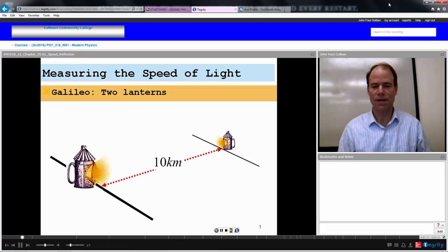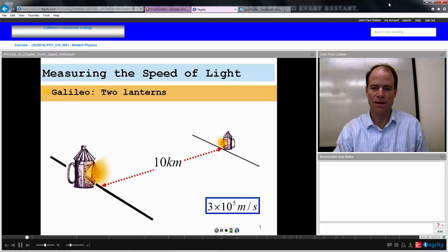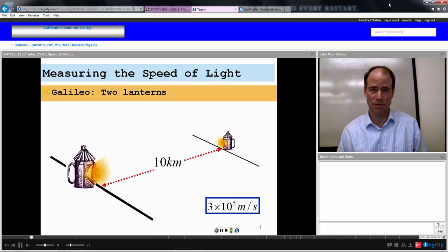Now, of course, there's reaction time involved here, so you would have to account for the human reaction time, maybe measure that somehow, and subtract that, and make that calculation. And based on all that, Galileo came up with a speed of light of 3 times 10 to the 5 meters per second. Not bad, but more than a thousand off, as far as a factor of a thousand off. Not good as far as we know, but not bad as far as realizing that the speed of light is really, really fast.